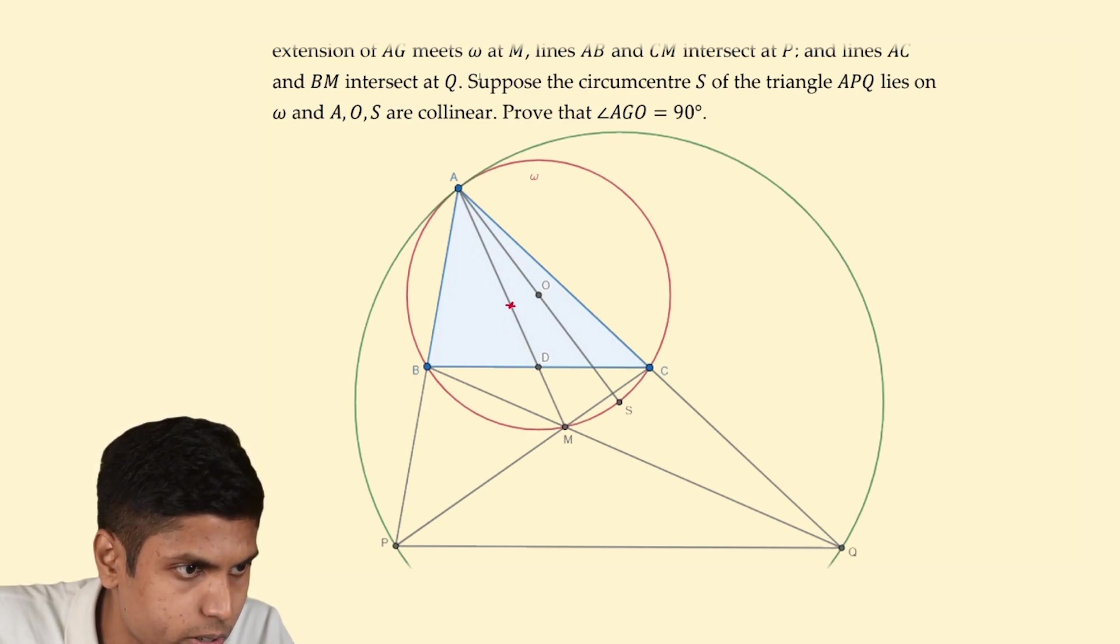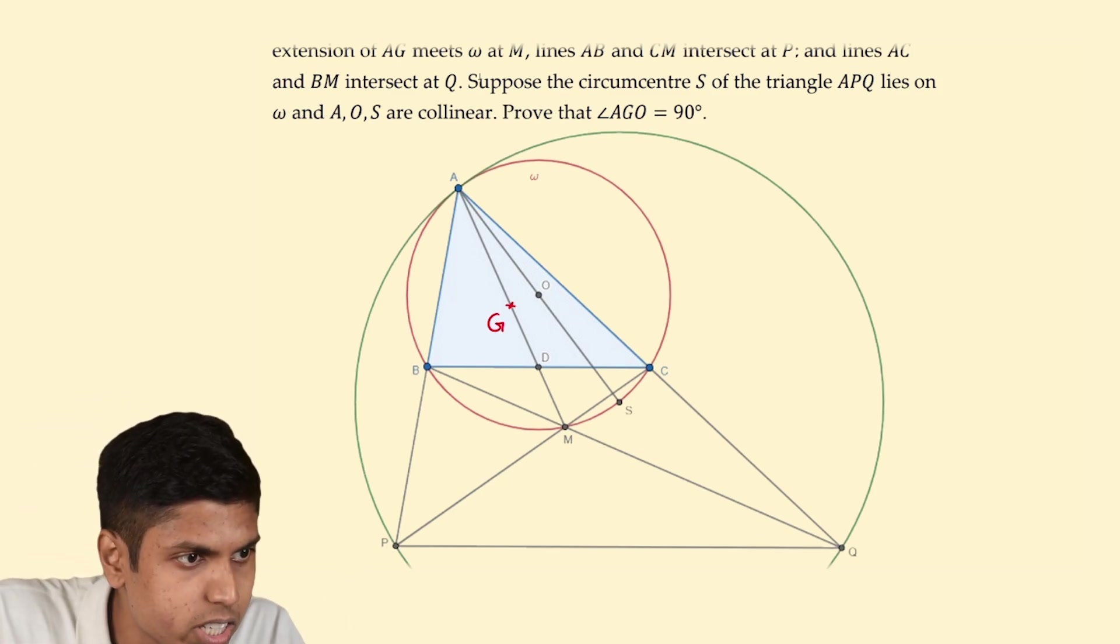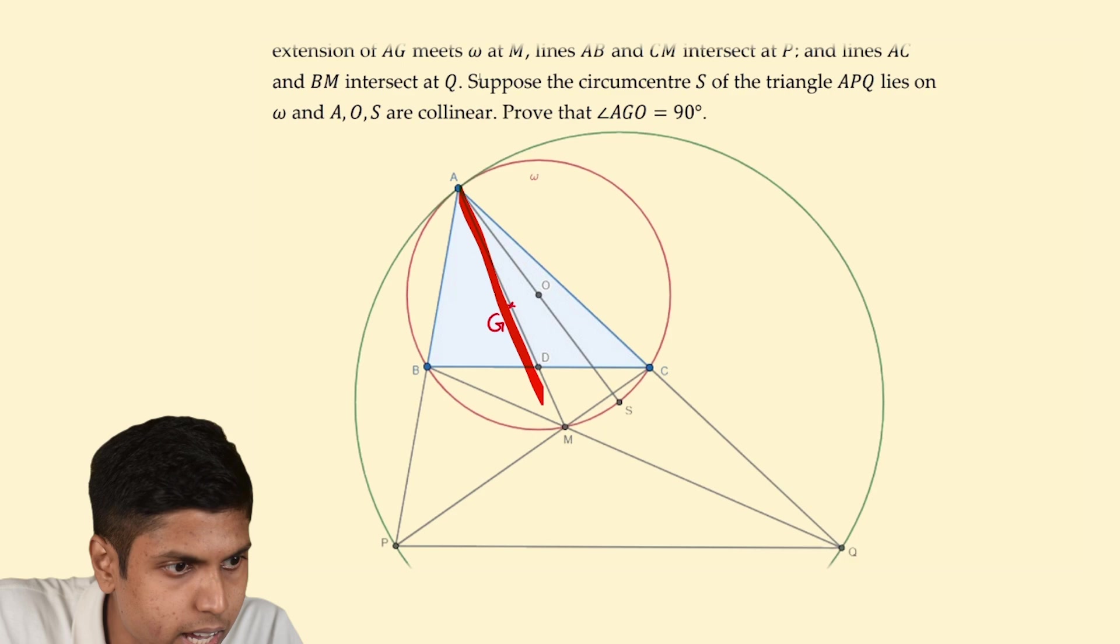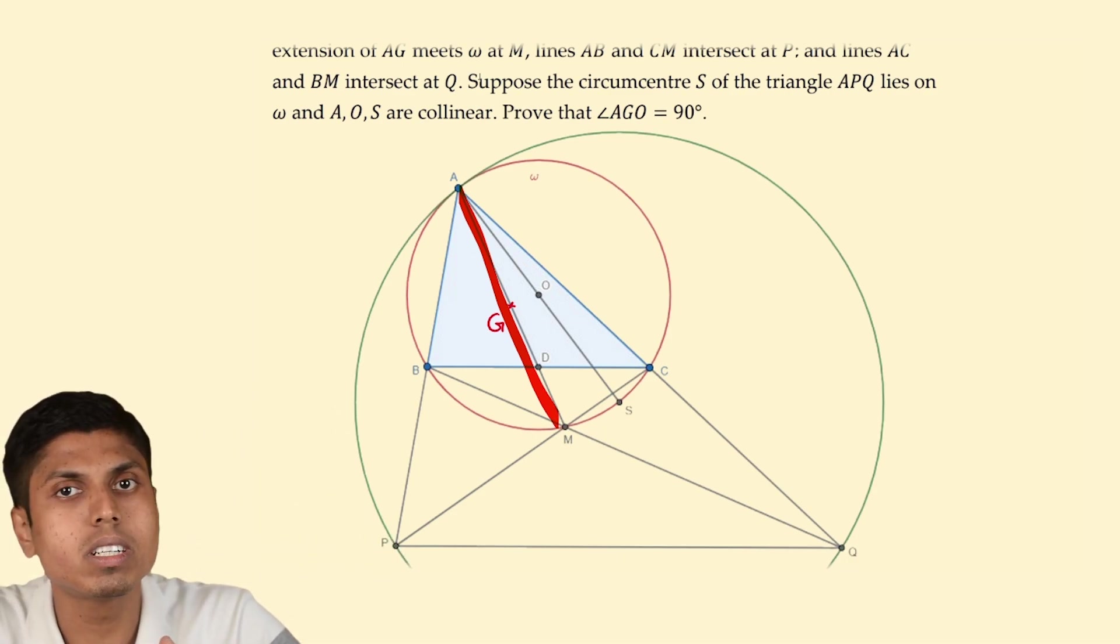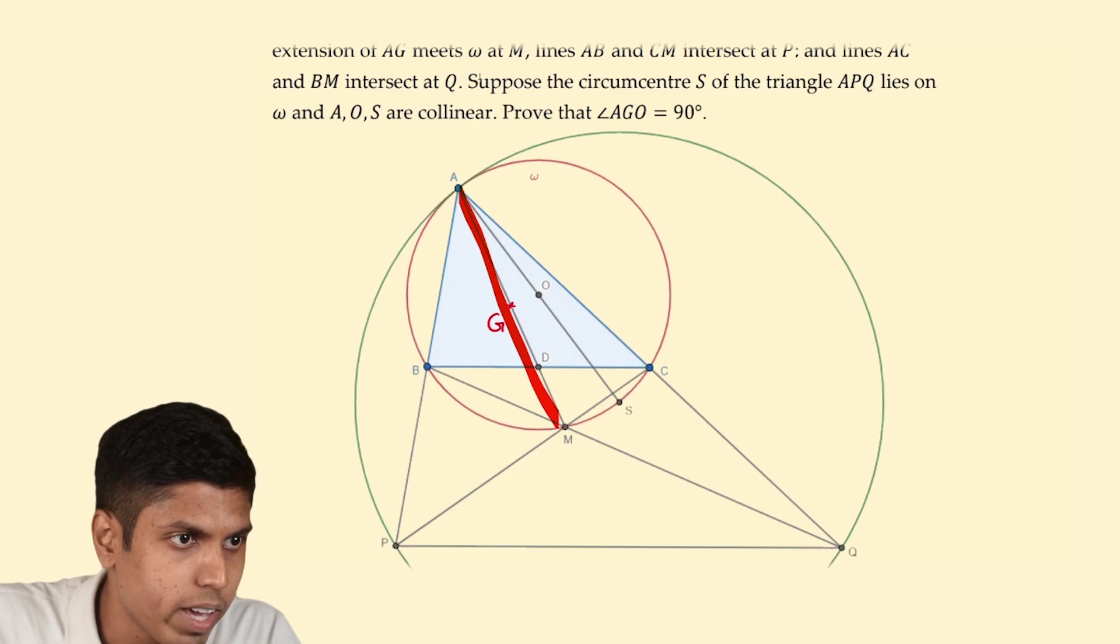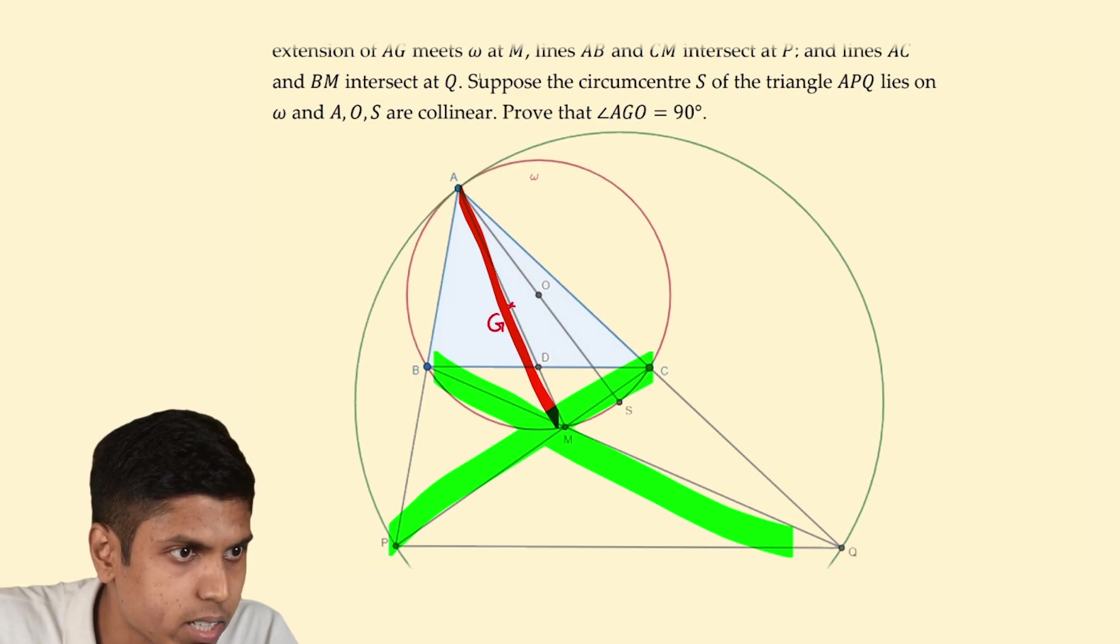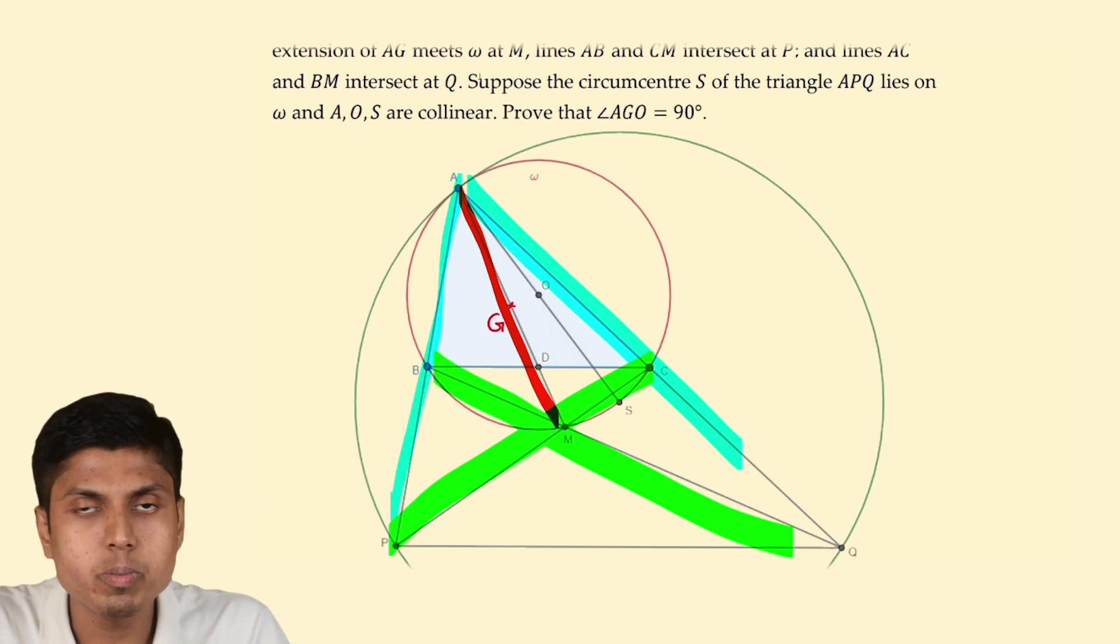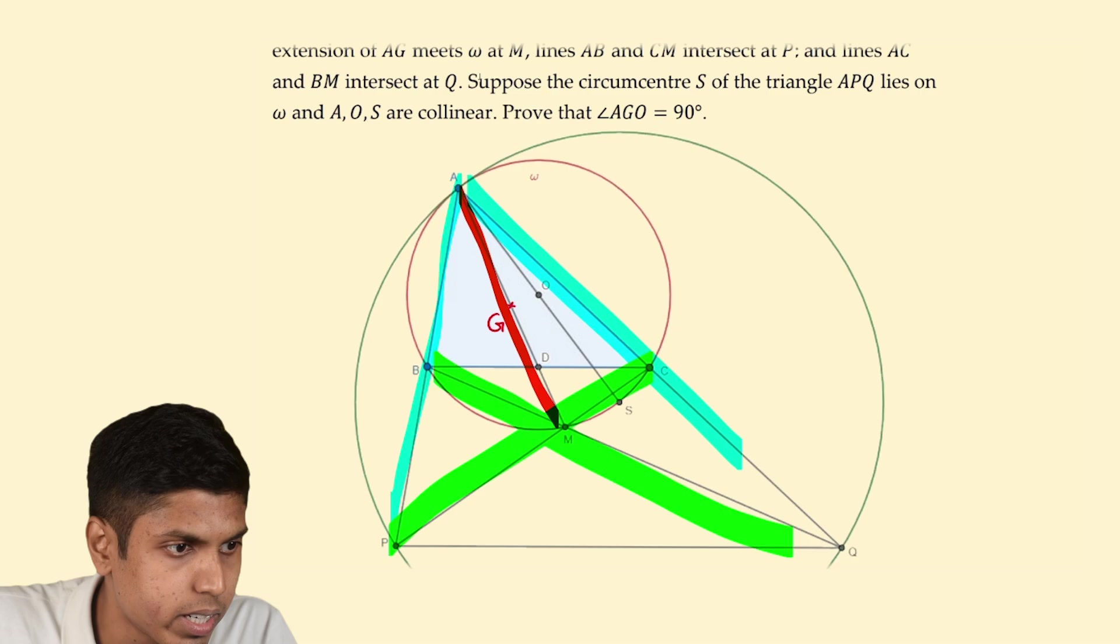Here we have the scalene triangle ABC and the point G, the centroid of the triangle. AG is the median that passes through the vertex A and it intersects the circumcircle again at M. We extend BM beyond M, CM beyond M to intersect the extended opposite sides at Q and P.